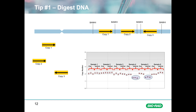In most instances, the restriction enzyme can be added directly into the reaction mix before generating droplets. Simply add the enzyme, mix thoroughly, and incubate at room temperature for 5 to 10 minutes, and then generate your droplets.